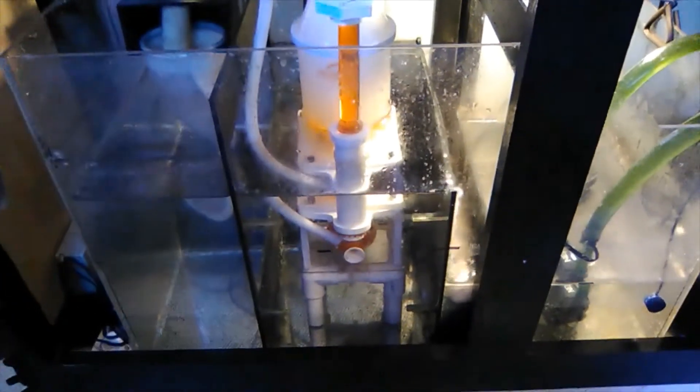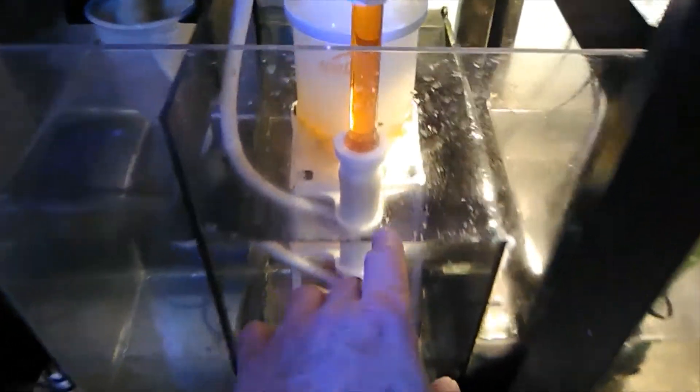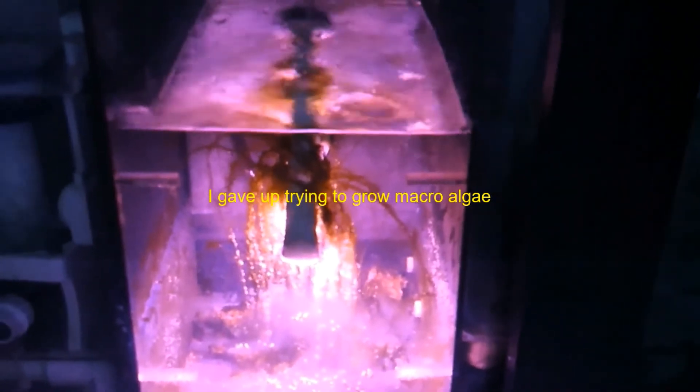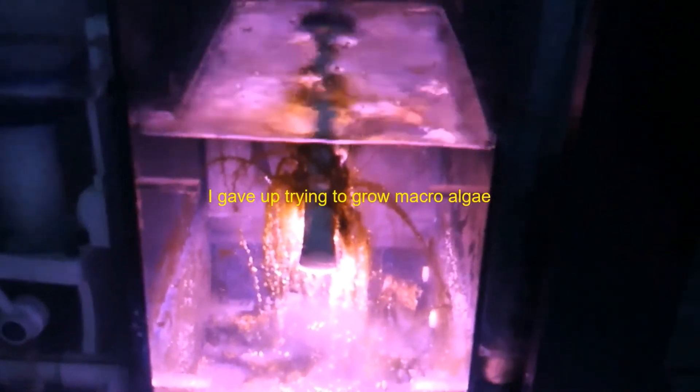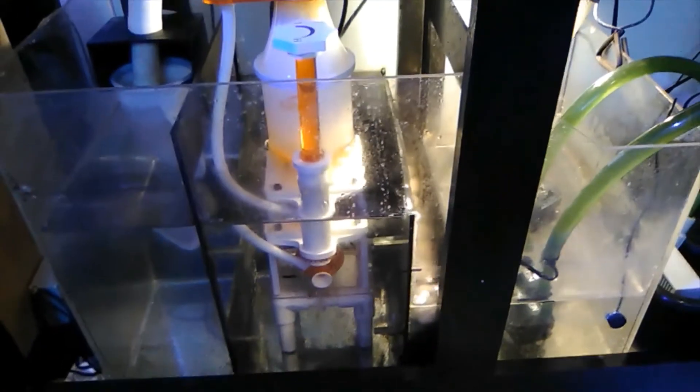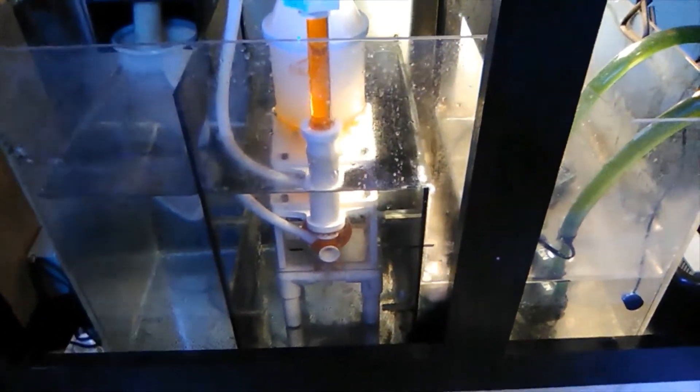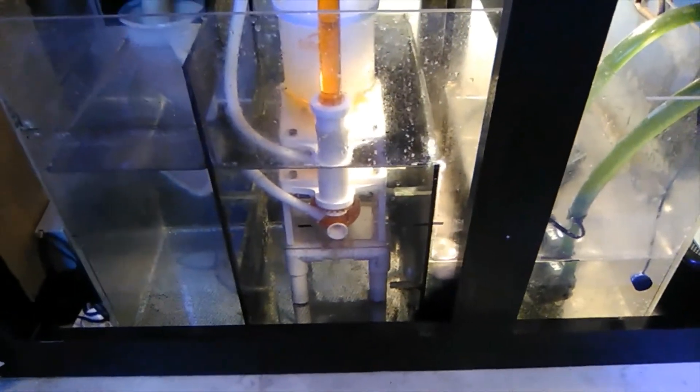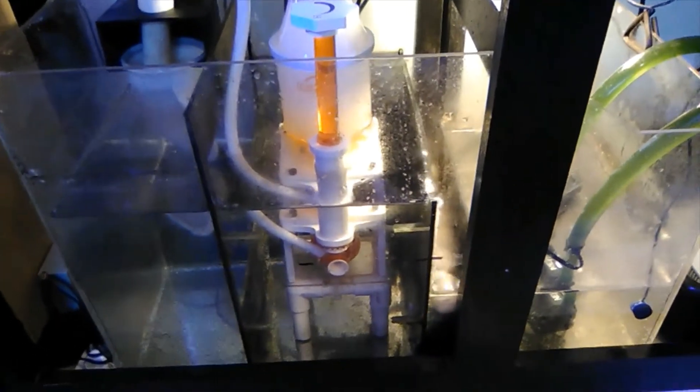And what I had in here for a really long time was this section was an algae scrubber. Here's what it used to look like. It would grow every type of nuisance algae that I've ever seen. Green, brown, red. It really did a good job of growing things that you didn't want. I had the Tunze refugium light in here and I had some dry rock in there and I just grew tons of nuisance algae and yanked it out and threw it away.